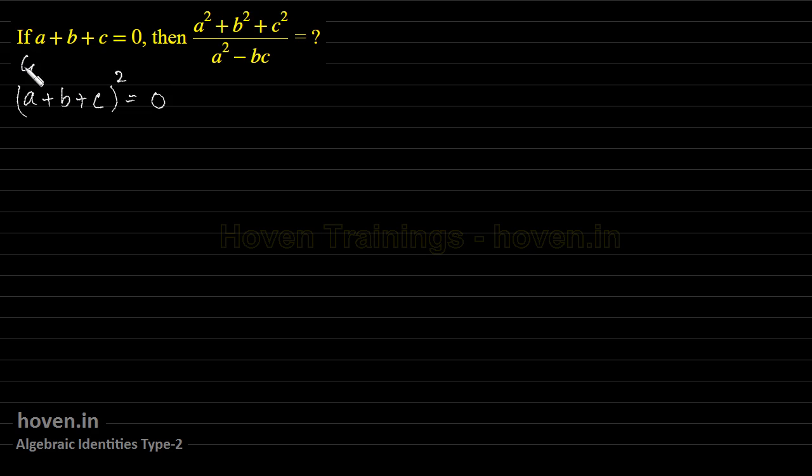This is what was given to us. So we can write a plus b plus c whole square equal to 0. Now we will open this a square plus b square plus c square plus 2ab plus bc plus ca equal to 0. So this opens this expression by the usual formula.